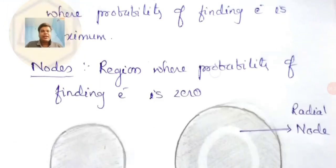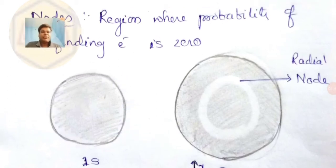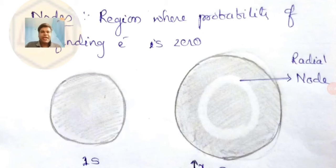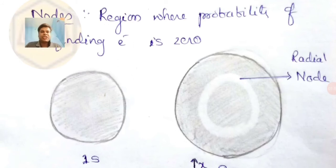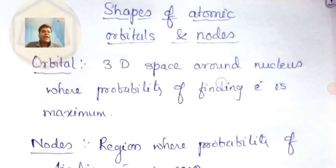For example, for the 1s electron, solving the Schrödinger wave equation gives a three-dimensional plot, and you get a spherical shape. This is not a circle — it should be imagined as a sphere. This spherical shape is shown as a boundary surface diagram, with the origin at 0,0,0 taken as the nucleus.